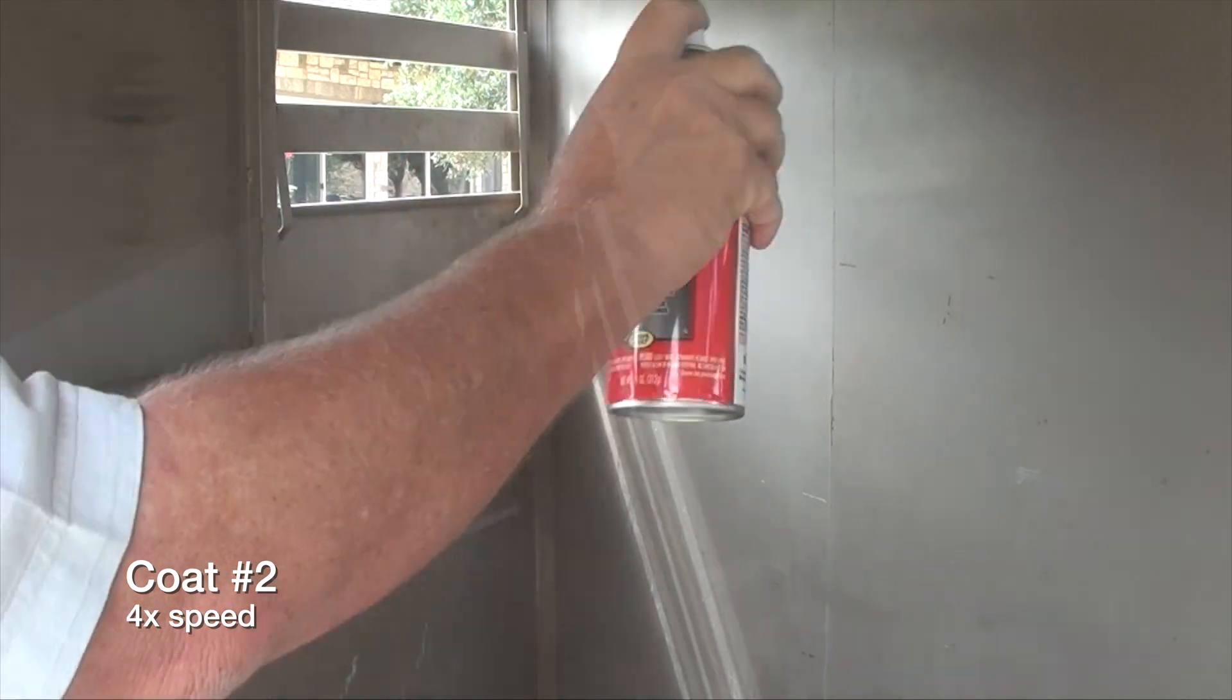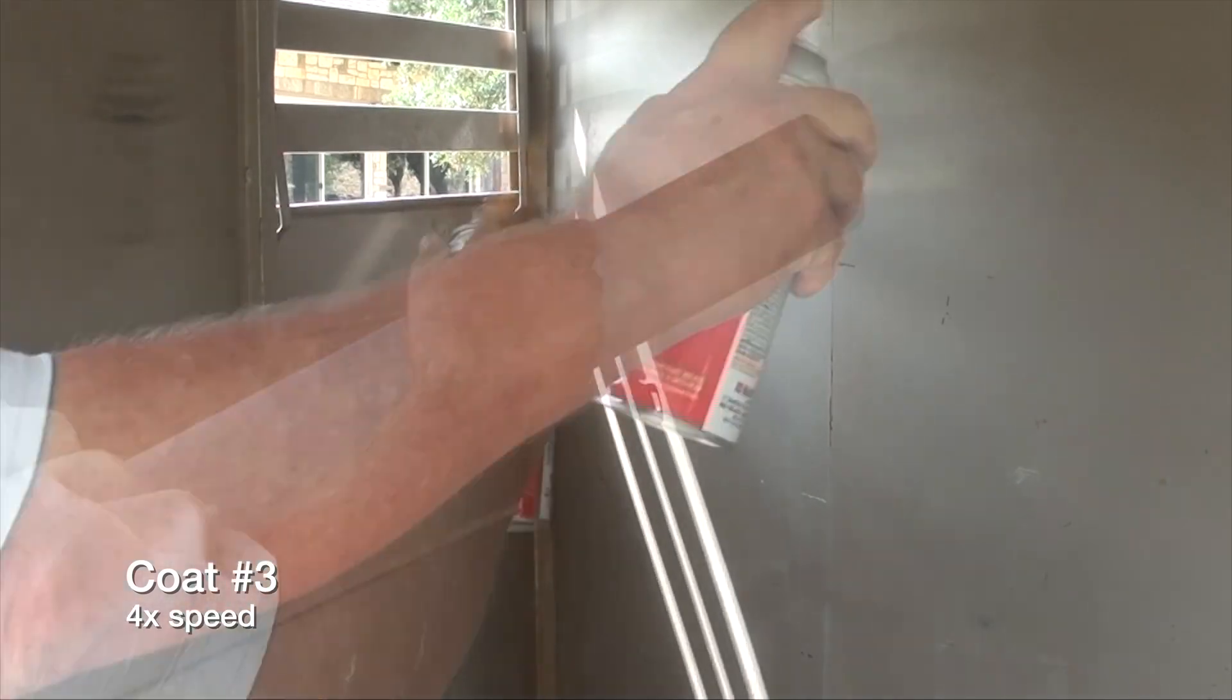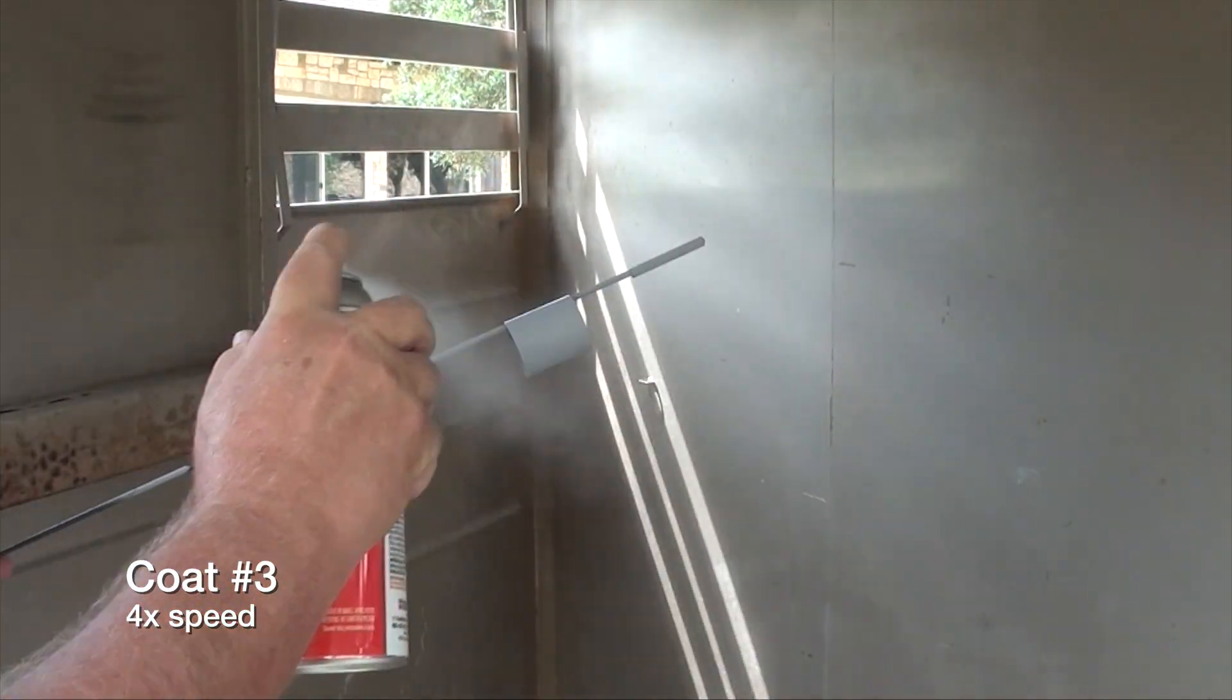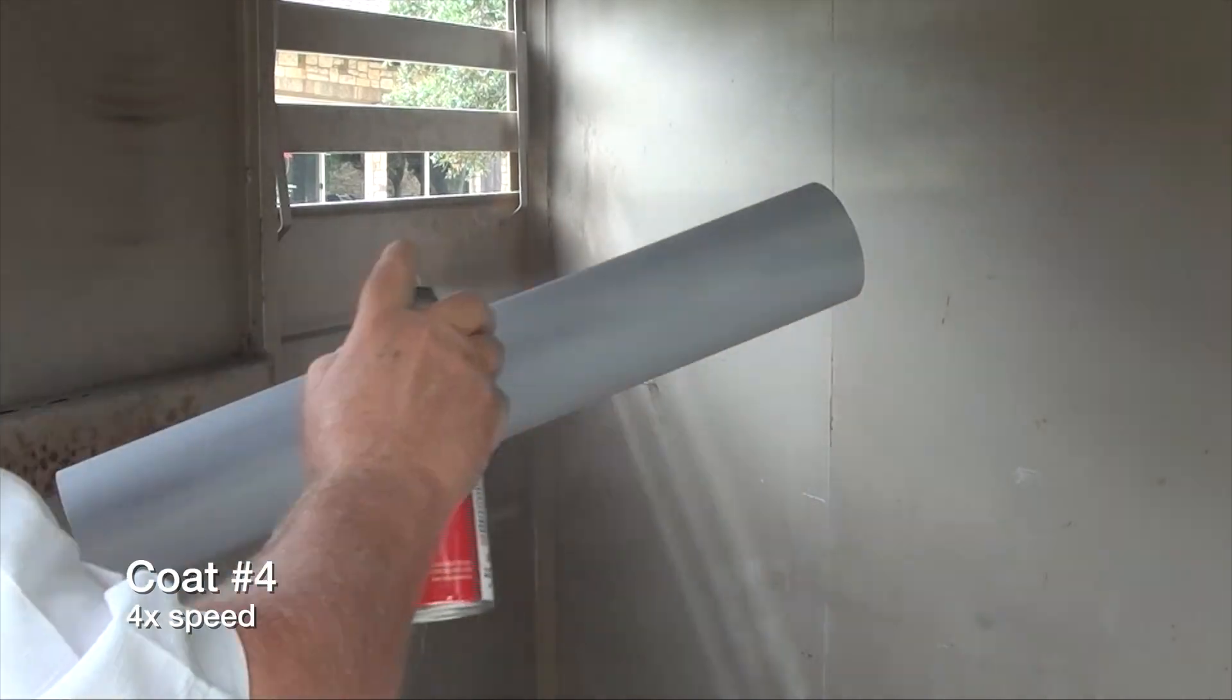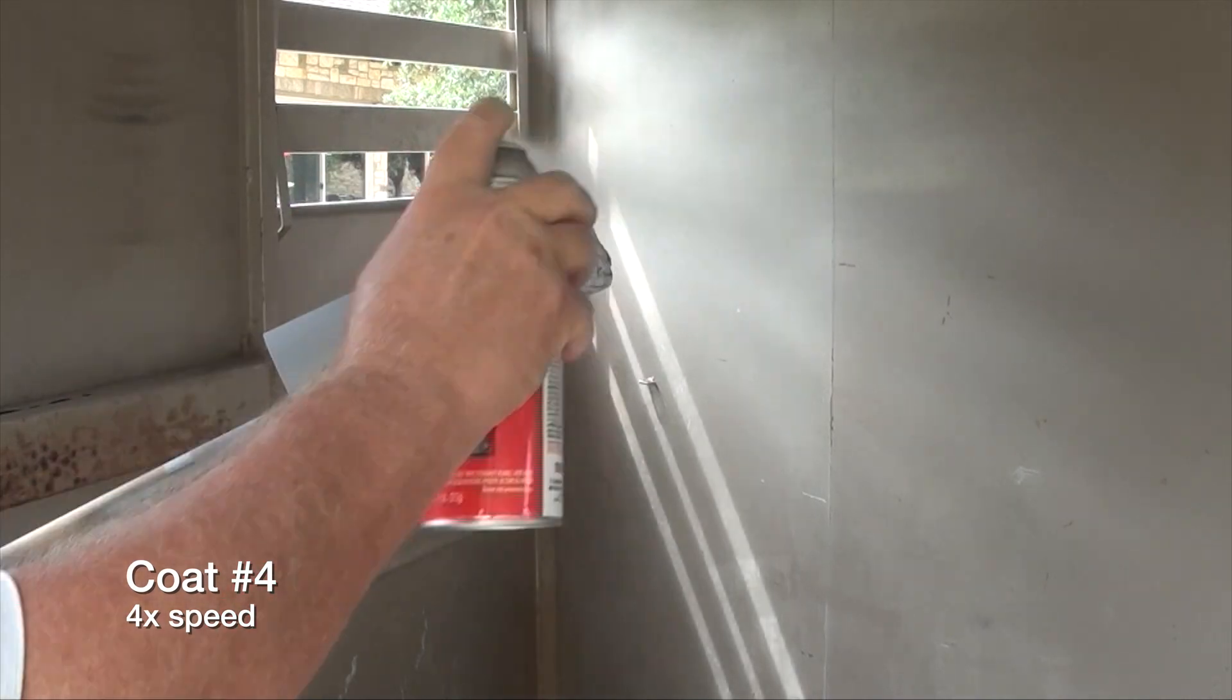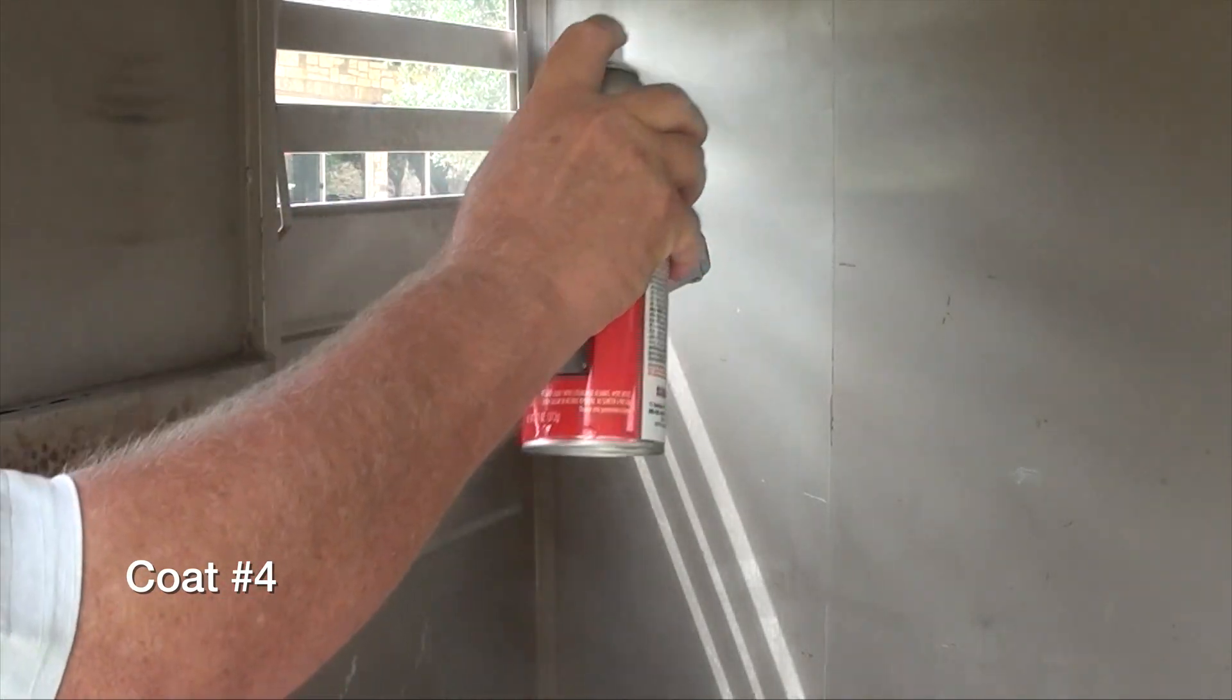Multiple light coats are the goal here. While we eventually want to have a healthy buildup of the high solids primer, we don't want to hit the surface of the parts with too much at once. Four coats of primer will go onto the parts to start with, allowing about seven to ten minutes between each coat. Note that the parts have been attached to simple handling sticks to make the process cleaner and easier.